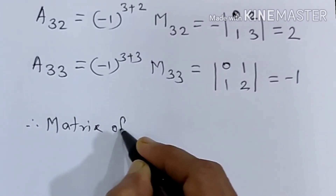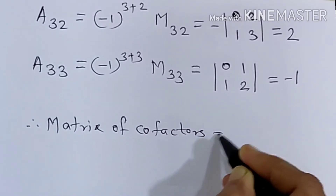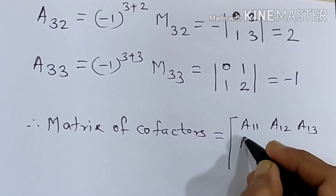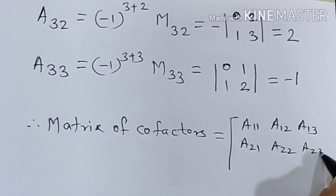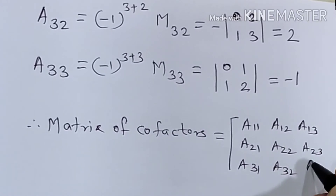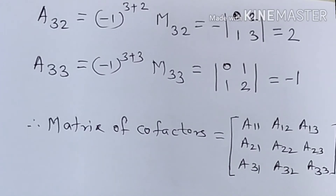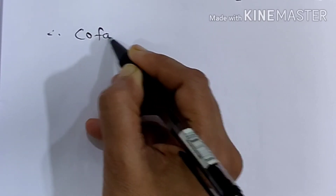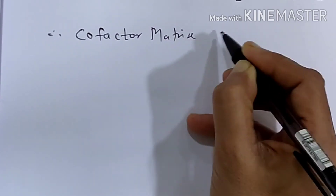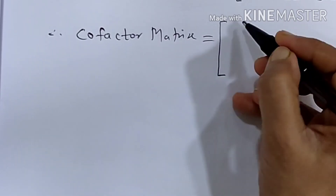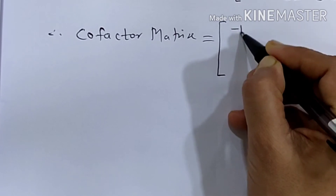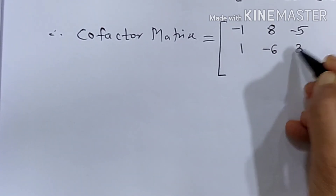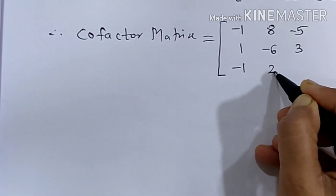The matrix of cofactors is assembled as: A11, A12, A13 in the first row; A21, A22, A23 in the second row; A31, A32, A33 in the third row. Substituting our computed values, the cofactor matrix equals: first row minus 1, 8, minus 5; second row 1, minus 6, 3; third row minus 1, 2, minus 1.